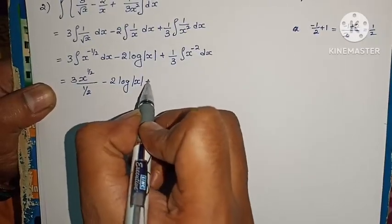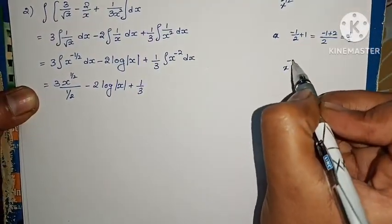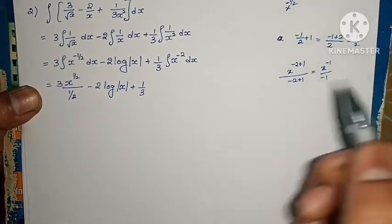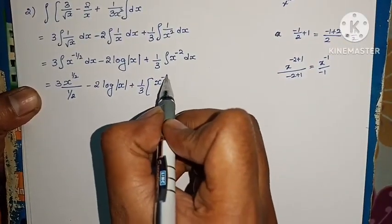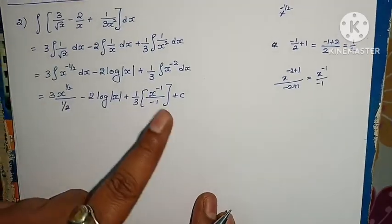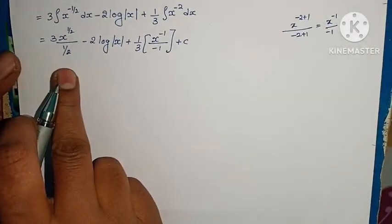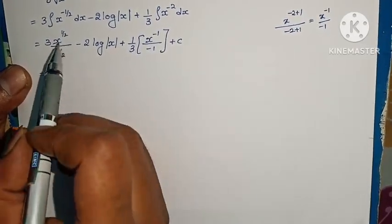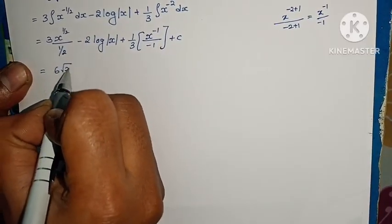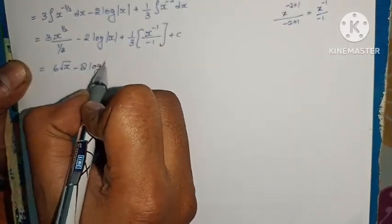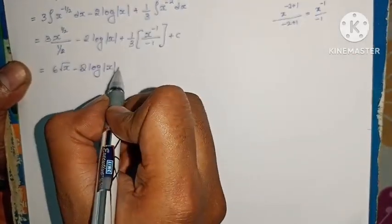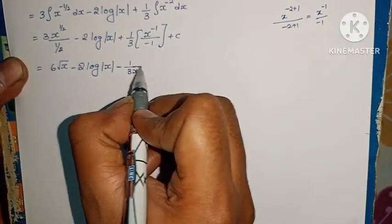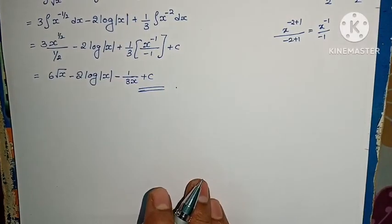Integration gives 3 times x power 1 by 2 divided by 1 by 2, minus 2 log mod x, plus 1 by 3 times x power minus 2 plus 1 by minus 2 plus 1. That is x power minus 1 by minus 1. Simplifying: dividing by 1 by 2 becomes multiply by 2, so root x. Minus 2 log mod x, plus into minus gives minus 1 by 3x plus c. Problem complete.